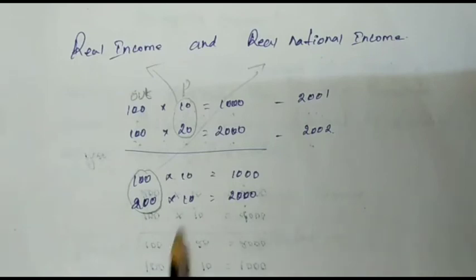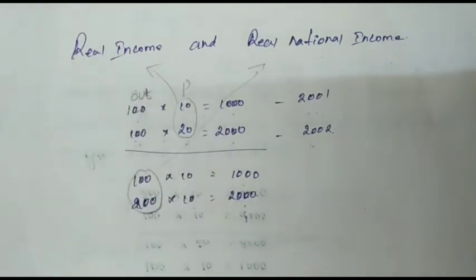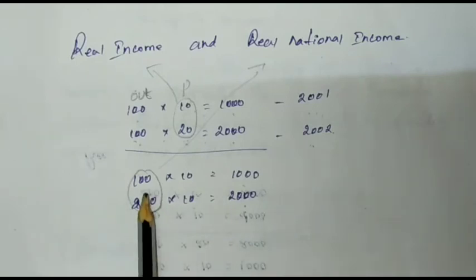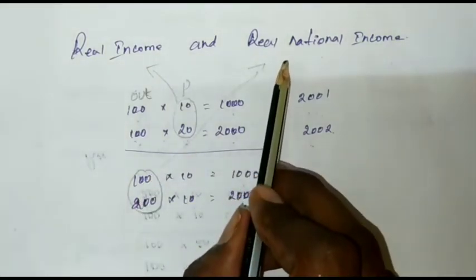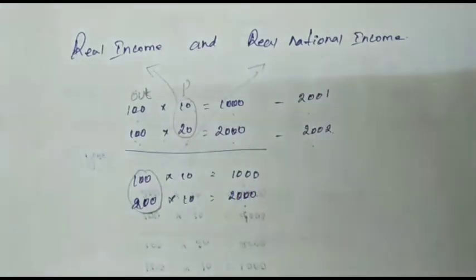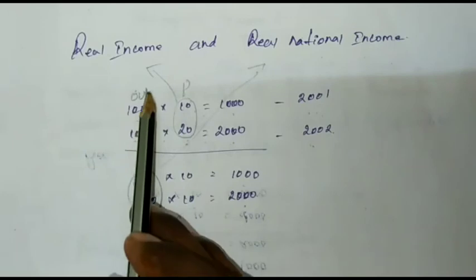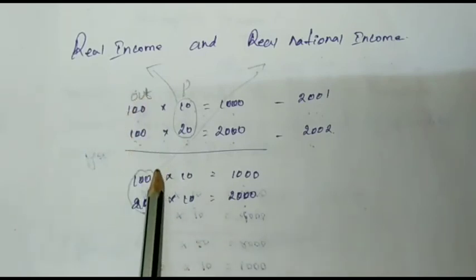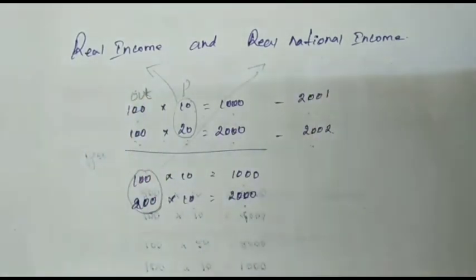Price increasing — that is real income. Output increasing — that will lead to real national income. Price increasing is real income; output increasing is real national income.